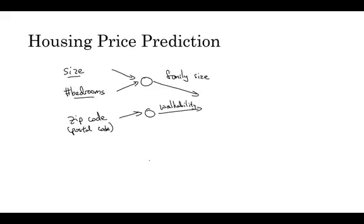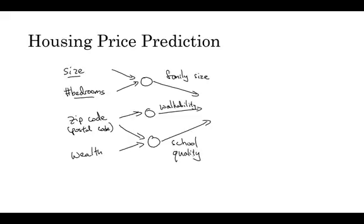And then the zip code as well as the wealth maybe tells you, certainly in the United States, but some other countries as well, tells you how good is the school quality. So each of these little circles I'm drawing can be one of those ReLU rectified linear units or some other slightly non-linear function. So that based on the size and number of bedrooms, you can estimate the family size, the zip code, estimate walkability. Based on zip code and wealth, you can estimate the school quality.